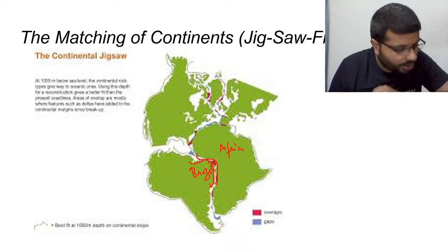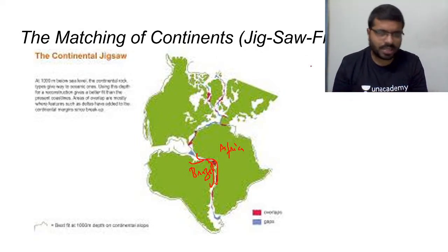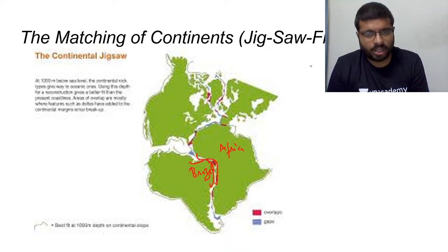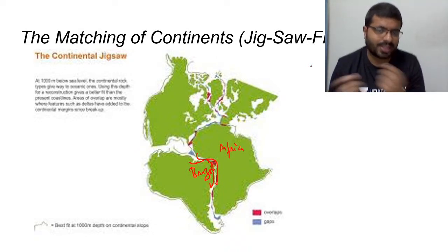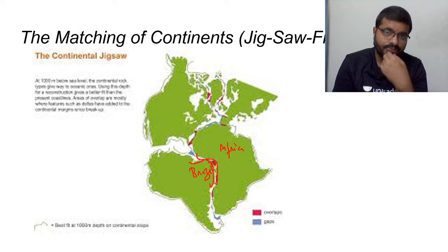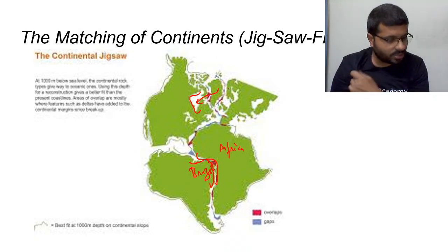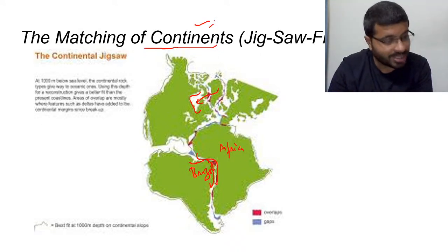The jigsaw puzzle analogy means: if you take all the present continents and push them together, they fit like pieces of a puzzle. Brazil and Africa are the best example. Similarly, Greenland fits into Hudson Bay in North America. If all landmasses are pushed together, they form one big landmass — this is one of the biggest evidences of continental drift theory.